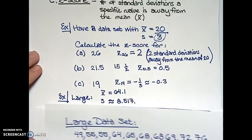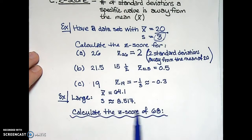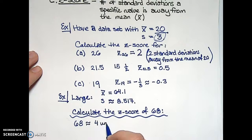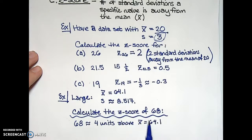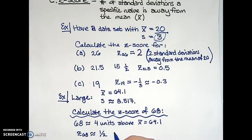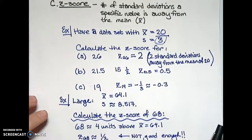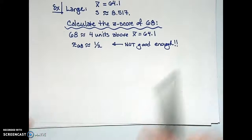In our large data set, suppose we wanted to know what is the z-score of 68. Well, 68 is approximately four units above the mean of 64.1, and since my sample standard deviation is about 8.5, I anticipate the z-score of 68 will be something close to one-half. But this approximation is not good enough — if we want a rigorous definition, we need a formula rather than just approximate values.